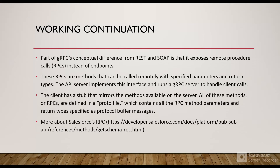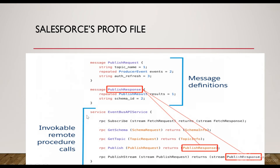As mentioned, the proto file contains all the methods with their parameters and return types — these are strongly typed parameters. Salesforce has its own RPCs defined as well. You can see the RPCs defined by Salesforce, which the client has access to call from their own application. These include subscribe, get schema, get topic, publish, and publish stream. The schema is strongly typed, so whatever schema request we send — for example the get schema parameter takes a schema request — must match the definitions already defined by Salesforce. If the schema request does not match, Salesforce will throw an error.